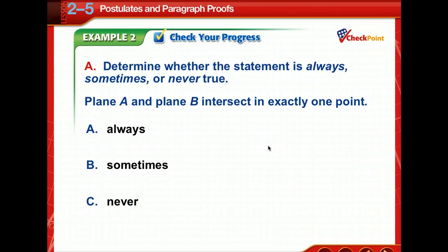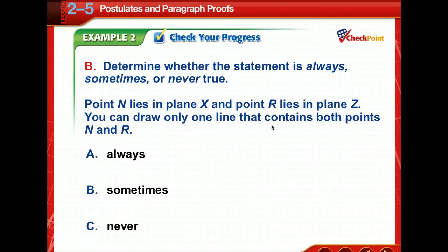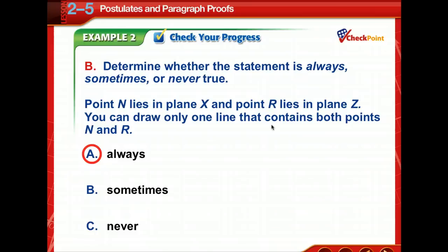Check your progress: determine whether each statement is always, sometimes, or never true. Plane A and plane B intersect in exactly one point — that would be never, because if two planes intersect, their intersection is a line. Point N lies in plane X and point R lies in plane Z; you could draw only one line that contains both points N and R — that is always true, because through any two points, there is exactly one line. Notice I'm not citing postulate numbers — I'm just telling you what the postulate means.